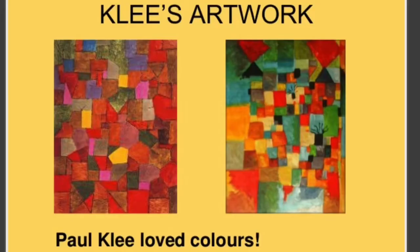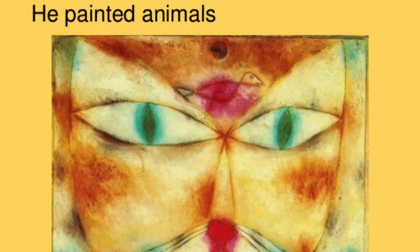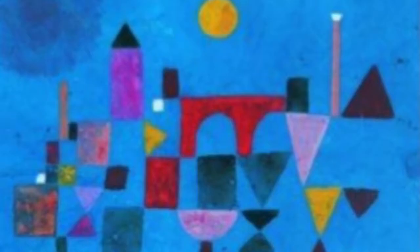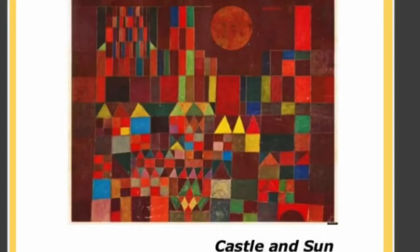Paul loved colors. He loved painting animals. He painted people. And in all of his paintings, he used simple lines and shapes. This is one of his most famous paintings called Castle and Sun.